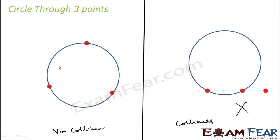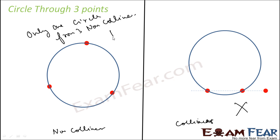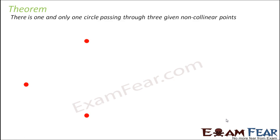And you can draw only one circle from three non-collinear points. That is our observation — it is an activity you are actually drawing on a piece of paper. So with this, there is a theorem: there is one and only one circle passing through given three non-collinear points. If you have three non-collinear points, you can have only one circle passing through them.